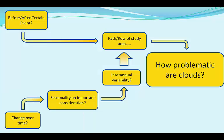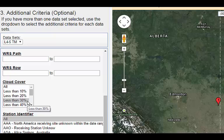The problem of cloud cover is obviously a major consideration, as we saw earlier, when five of the first seven potential scenes were unusable. While I have presented this issue here as a late consideration in the decision process, you really need to consider it from the beginning, as some seasons are simply cloudier than others. But as we've seen, clouds are often problematic even during what we think are the best seasons. Rather than just leave it till the results phase to eliminate cloudy scenes, you can set a maximum cloud cover filter earlier. Here I've gone back, clicked on the additional criteria button, and set a maximum cloud cover of less than 30%, and repeated the previous search.